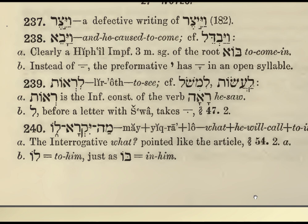Lessons 21 and 22 in the textbook Harper's Introductory Hebrew Method, going through Genesis in detail. It's defective — a Yud is missing. By Yahweh — he caused to come. Compare this with 'Yabal': it's clearly a Hifil imperfect third-person masculine singular of the root Bo, meaning 'to come.' Instead of the Patah, the pre-formative Yud has the Kametz in an open syllable.